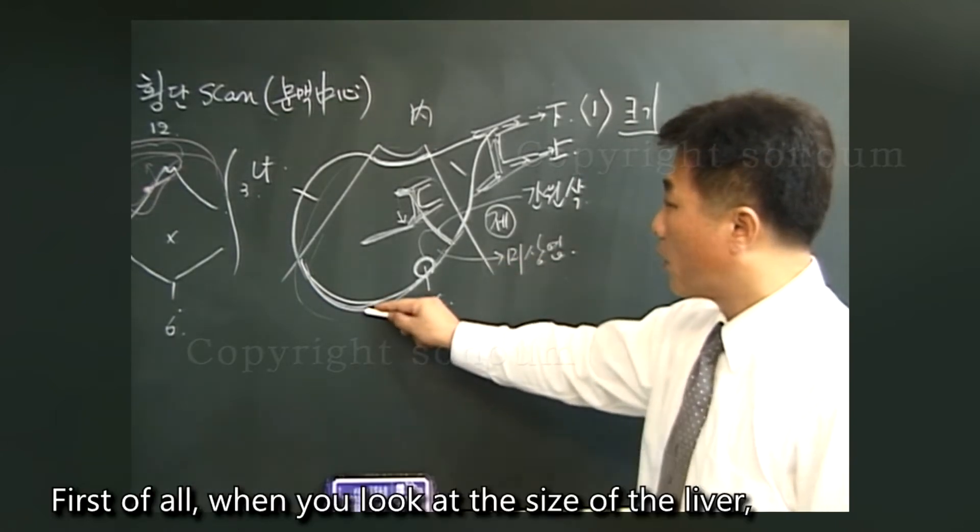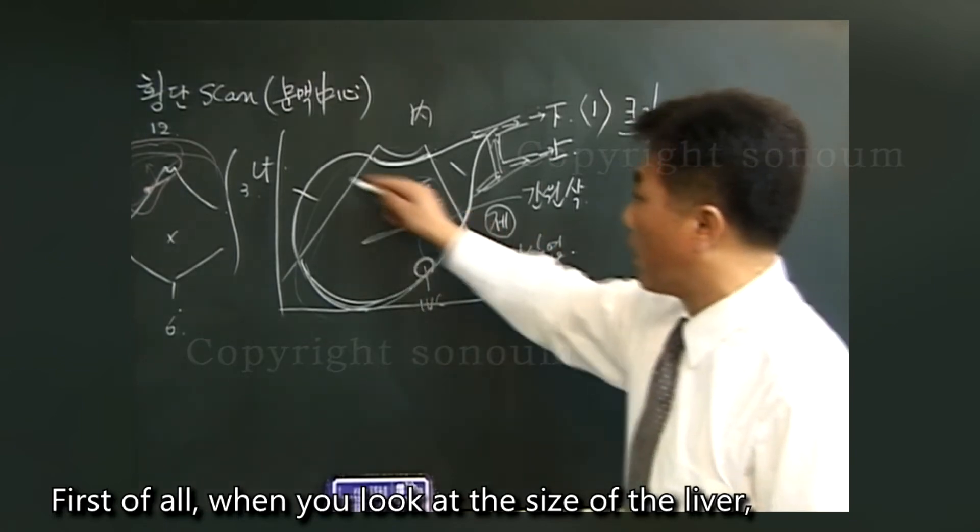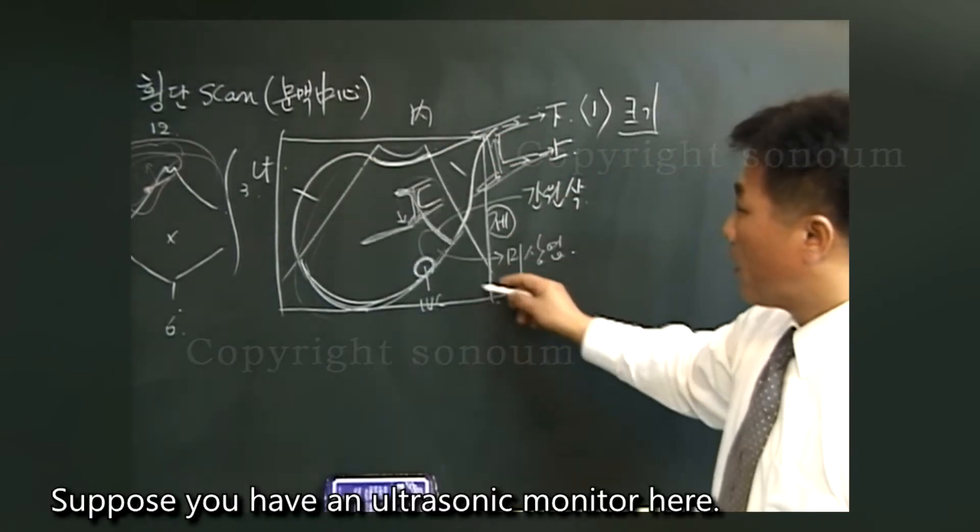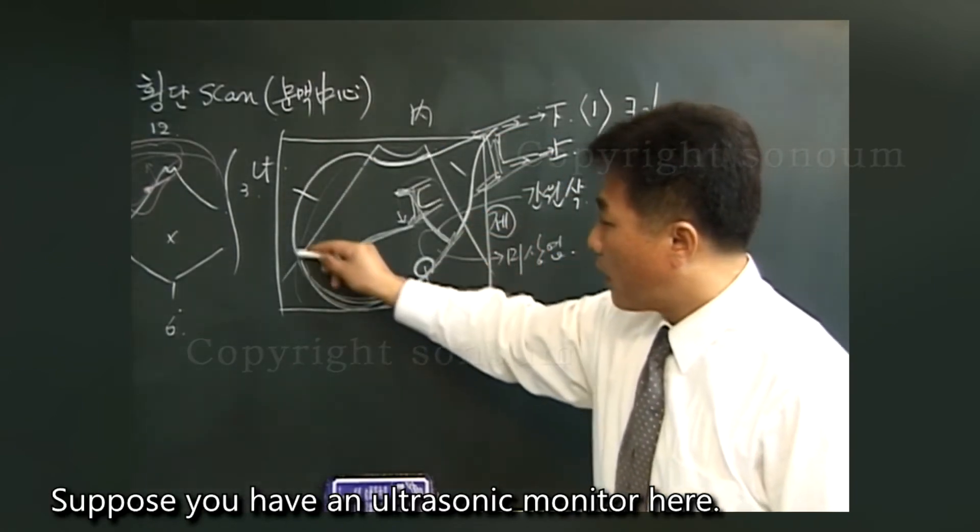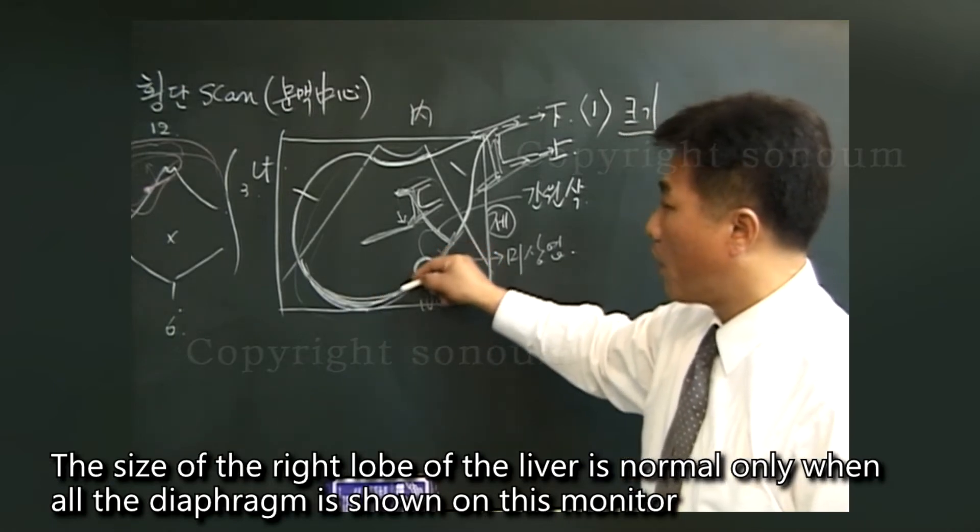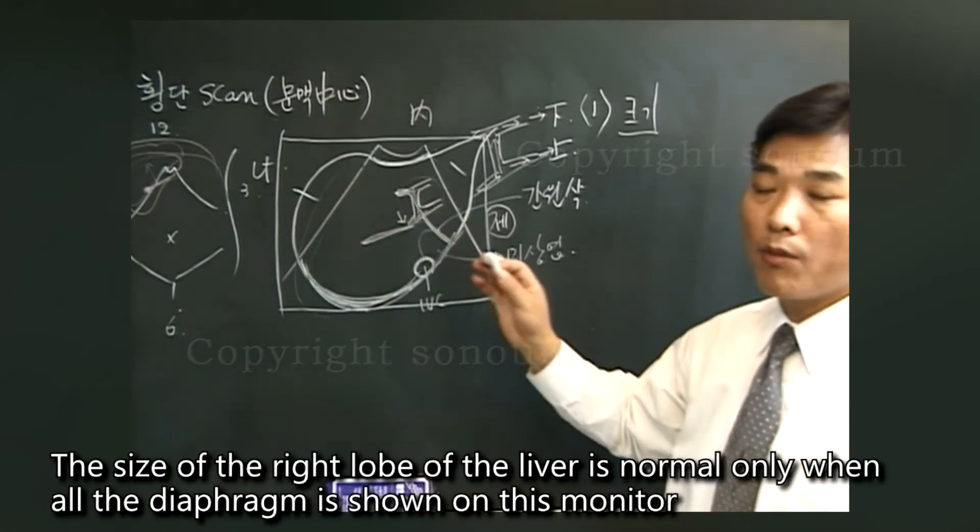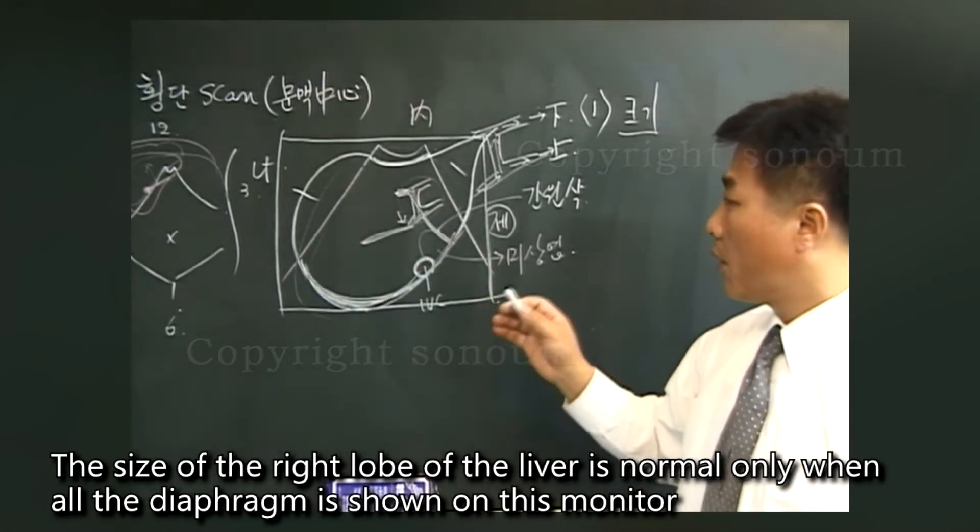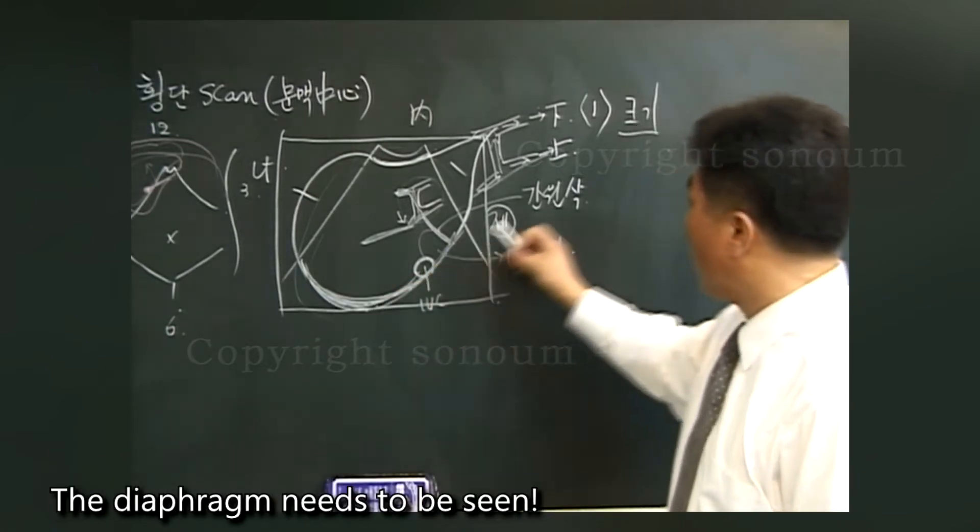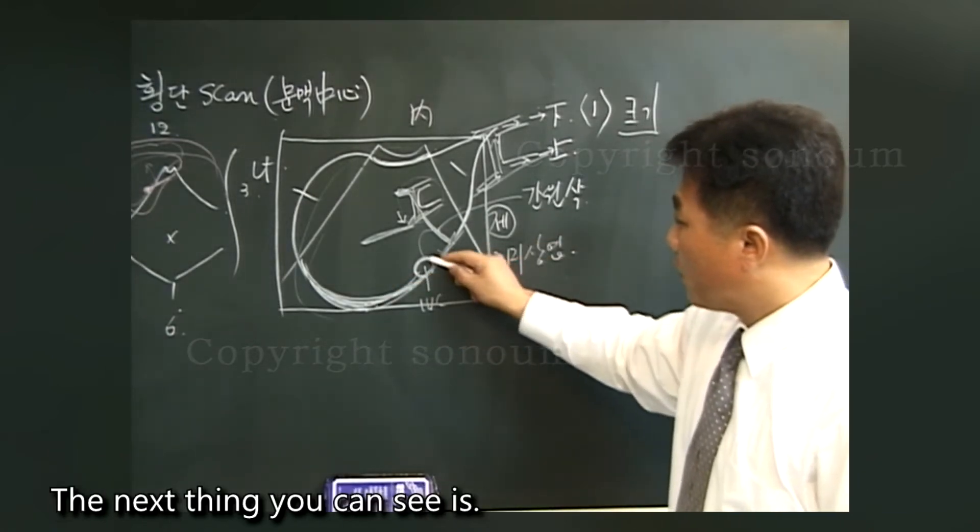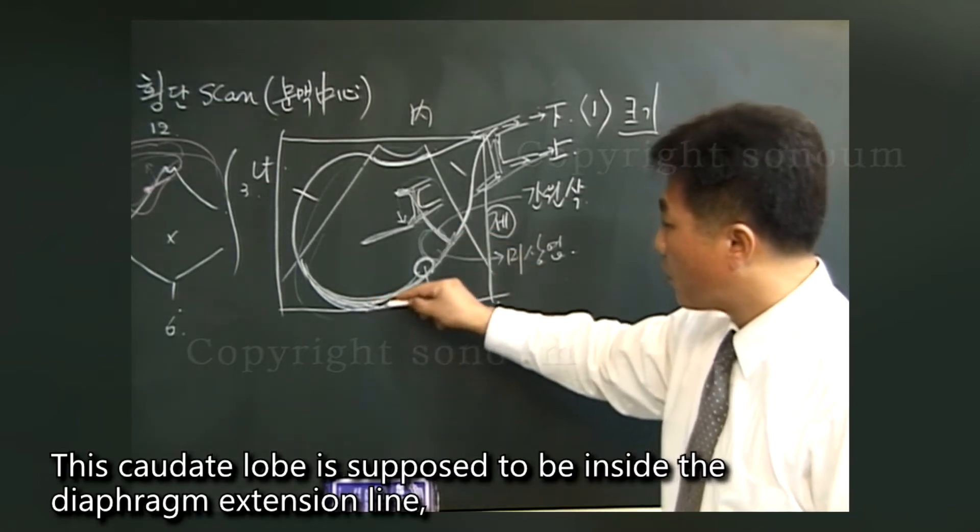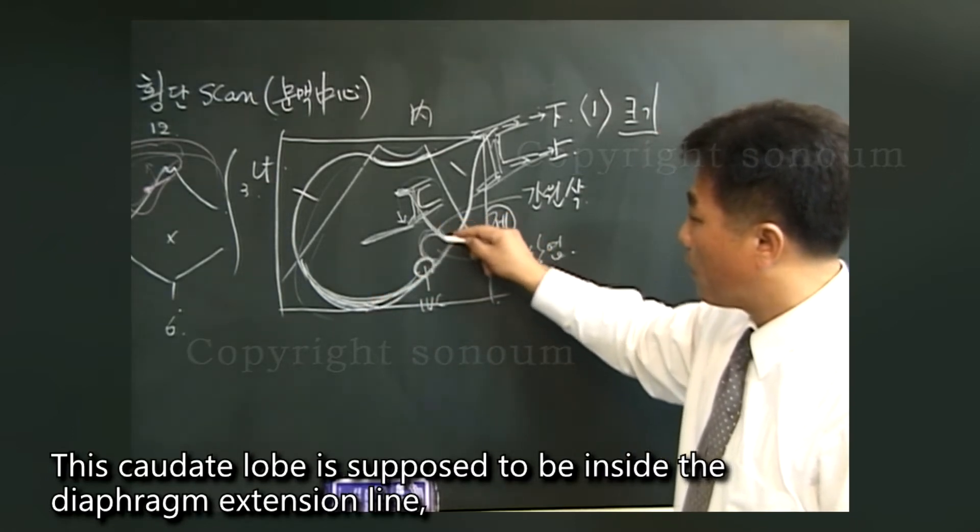First of all, when you look at the size of the liver, when you look at the liver right lobe, suppose you have an ultrasonic monitor here. The size of the right lobe of the liver is normal only when all the diaphragm is shown on this monitor. The diaphragm needs to be seen. The next thing you can see is, this caudate lobe is supposed to be inside the diaphragm extension line.